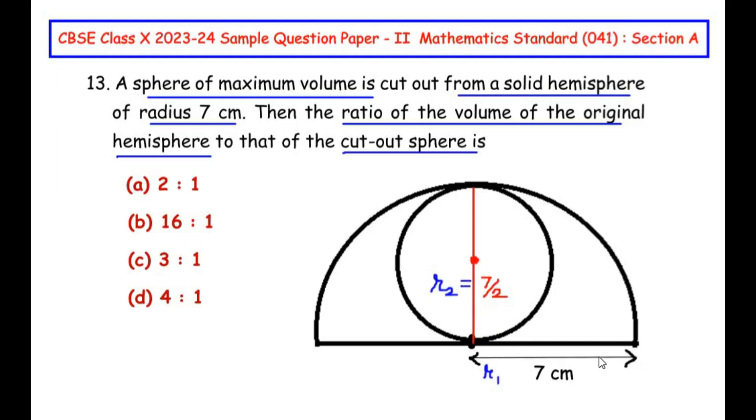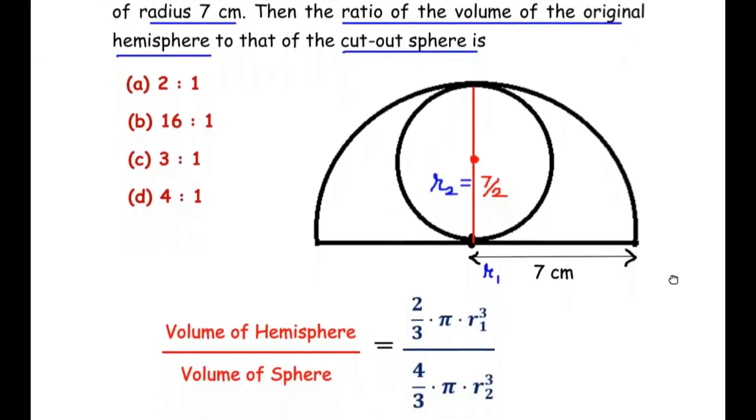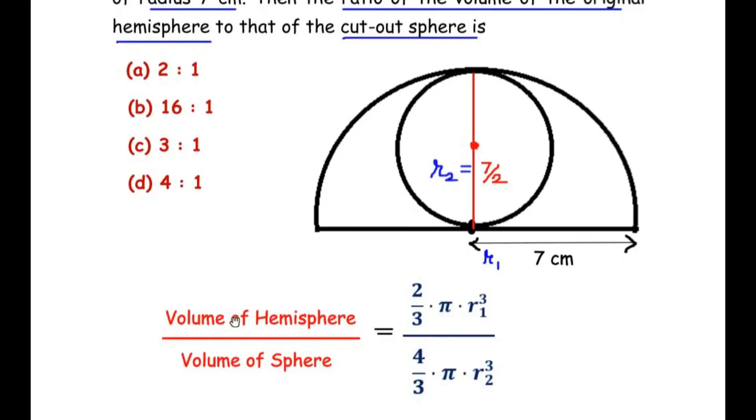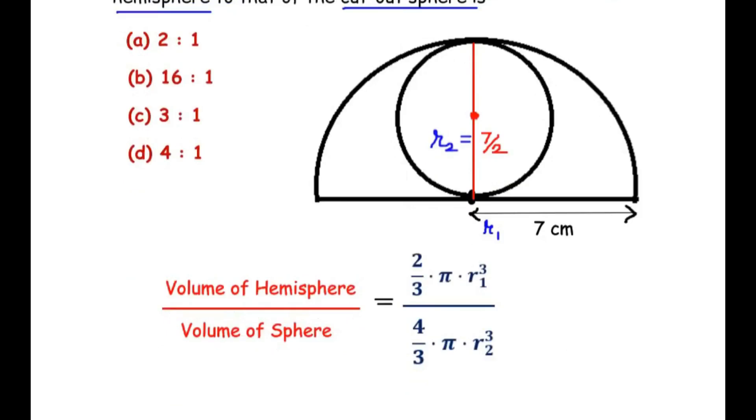Now once we have the radius of the hemisphere and sphere, we are going to use the formula for volume of the hemisphere and volume of the sphere to form a ratio. The ratio of volume of the original hemisphere to the volume of the cutout sphere is (2/3)πR₁³ divided by (4/3)πR₂³, where R₁ is the radius of the hemisphere and R₂ is the radius of the sphere.